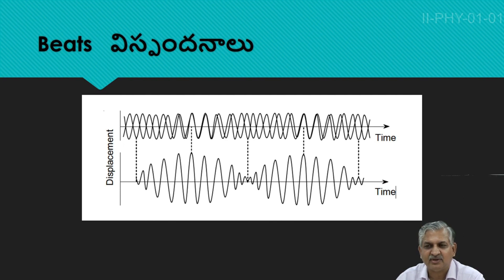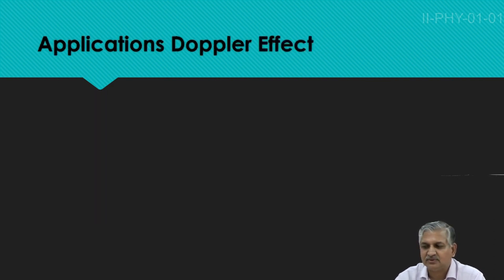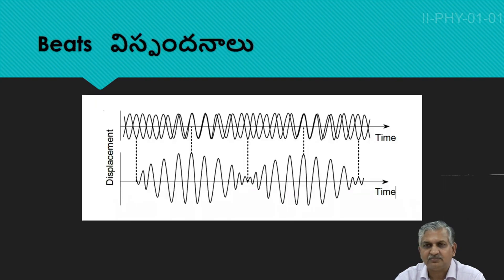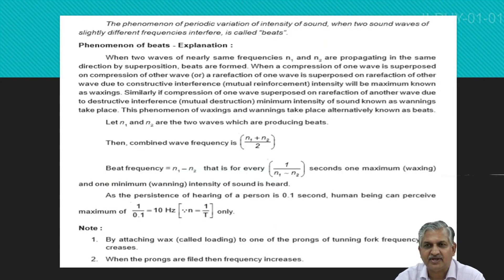We are going to discuss about this phenomenon of beats. The combined wave frequency is nothing but (N1 + N2) / 2, and the beat frequency is given by the formula N1 minus N2.